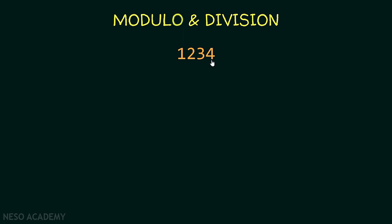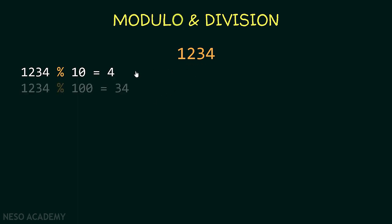All we have to do is extract these digits. We will start with the last digit: 1234 modulo 10 is equal to 4. Now what about the others? If we say 1234 modulo 100, this will give us 34.